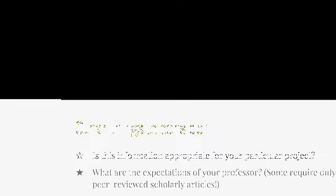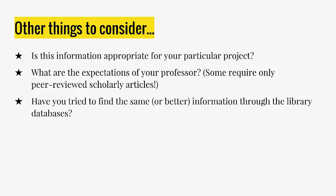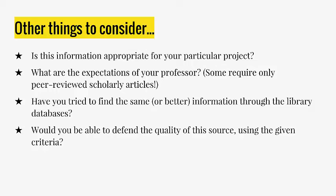If you use the Open Web to conduct research, it's important to evaluate the purpose, authority, accuracy, timeliness, and objectivity of your source. Is this information appropriate for your particular project? What are the expectations of your professor? Some require only peer-reviewed scholarly articles and don't want you using the Open Web. Have you tried to find the same or better information through library databases? Would you be able to defend the quality of this source using the given criteria? Remember, you're responsible for the quality of the information that you use — think critically about what you're reading and select your sources carefully. For more information, you can contact your librarian, who can help you determine if your information is reliable.